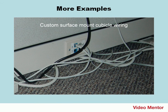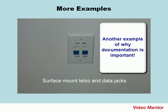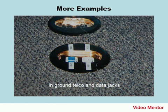Here we see flush mount jacks for telco and for data. We ran this through the cubicle areas that didn't have any wiring in them. The telco and data jacks are numbered, and that corresponds to the network documentation for the entire physical plant. Usually I use white for telco and blue for data. And here you see some in-ground telco and data jacks that go through a concrete footing through a conduit — definitely a fun project.